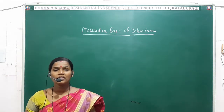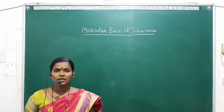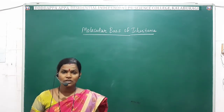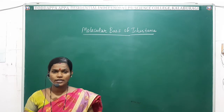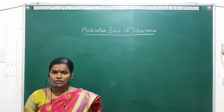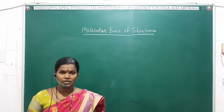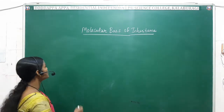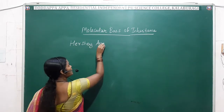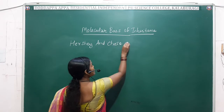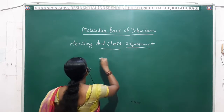Hello students. In the previous class we saw the Griffith experiment and Avery's experiment, both proving DNA as the genetic material. Griffith used a mouse model and Avery worked in vitro in laboratory conditions. Today we are going to see one more experiment proving DNA as genetic material — that is the Hershey and Chase experiment.